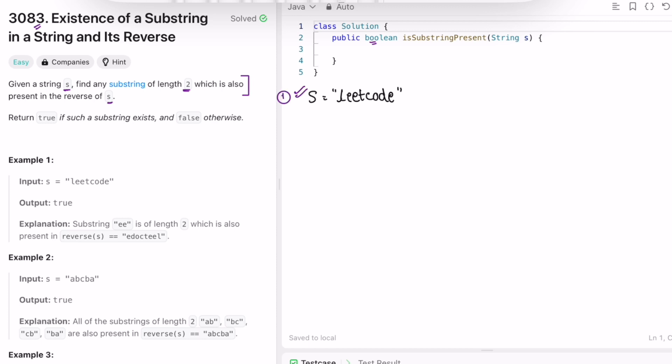Let's take the first example given to us. We have to find a substring of length 2 which is present in s and also the reverse of s. So let me form the reverse of s. Now we have to find substrings of length 2 and check if that substring is present in both s and reverse of s.